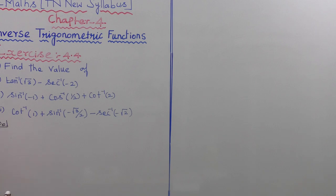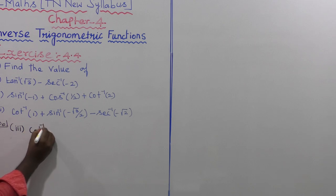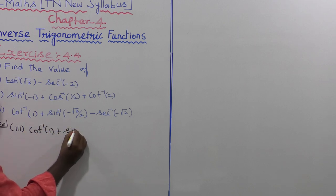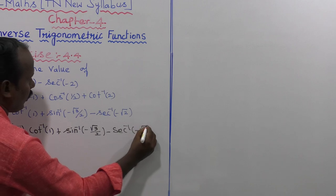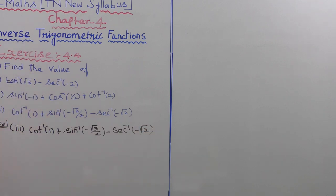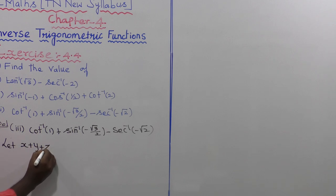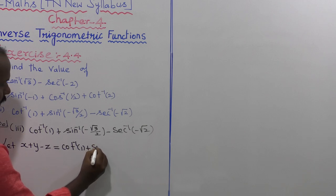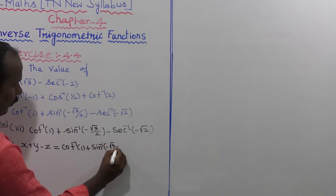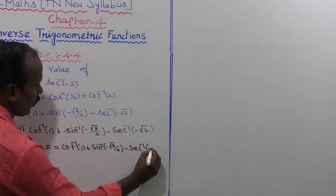Exercise 4.4, the third subdivision. We have to find the third subdivision: cot inverse of 1 plus sine inverse of minus root 3 by 2, minus secant inverse of minus root 2. Let us consider this as x plus y minus z, equal to cot inverse of 1 plus sine inverse of minus root 3 by 2 minus secant inverse of minus root 2.